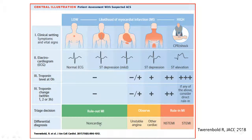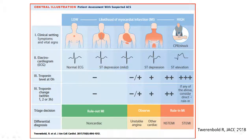If the troponin is very positive, it is an automatic rule-in. For example, if the patient hits the ER with a troponin of 300 to 400, those are considered very high numbers and those patients automatically rule in — even if it is a non-STEMI. We should not wait six hours apart for the next troponin; do troponins every hour.